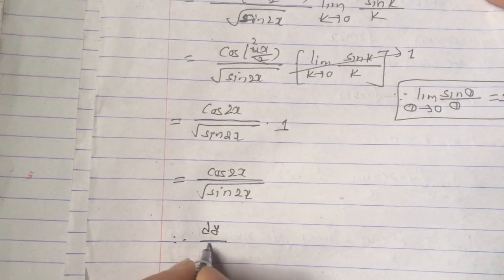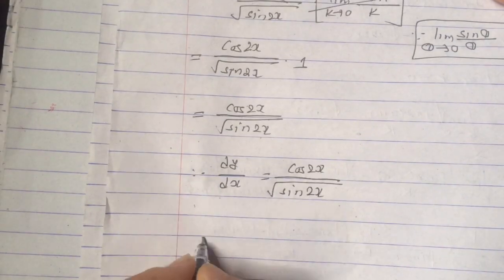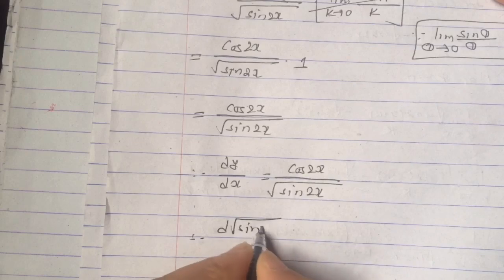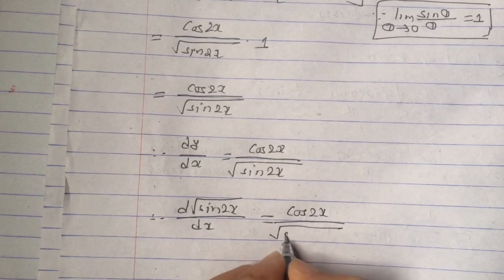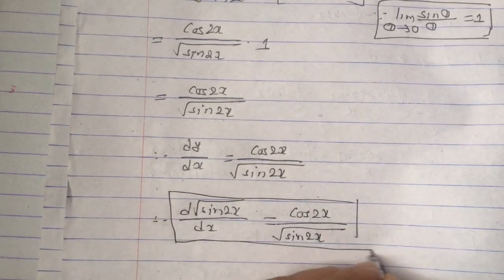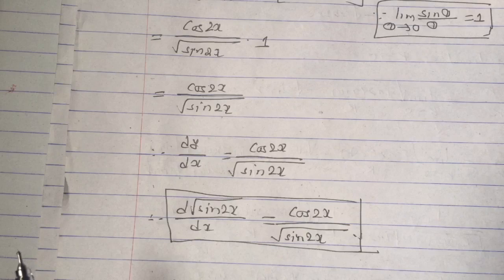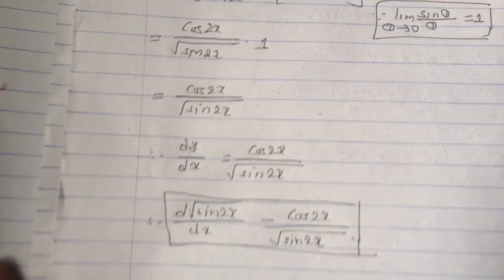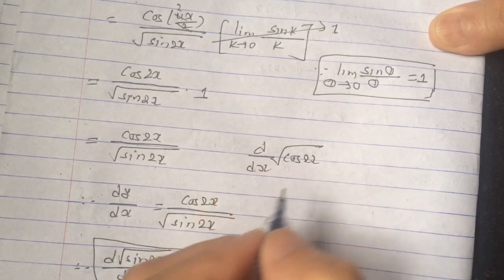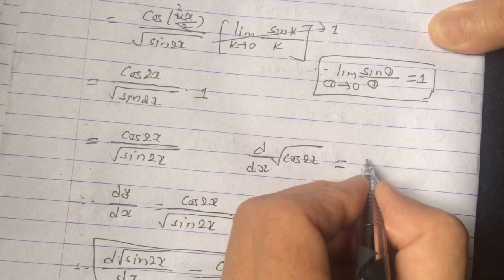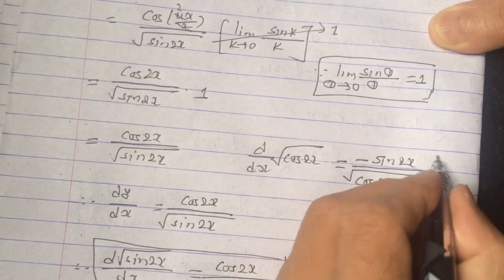So dy/dx, where y = √(sin 2x), equals cos(2x) / √(sin 2x). This is how you can find the derivative of √(sin 2x) with respect to x from first principles. Similarly, you can try finding the derivative of √(cos 2x) from first principle — the answer should be −sin(2x) / √(cos 2x). Try it once!